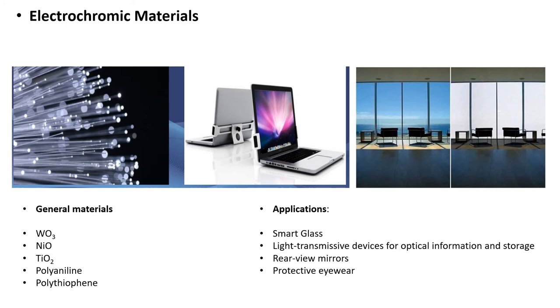The general materials used for electrochromic materials are tungsten oxide, nickel oxide, titanium oxide, polyaniline, and polythiophene. The most wide applications are smart glass, light transmissive devices for optical information and storage, rearview mirrors, protective eyewear, etc.